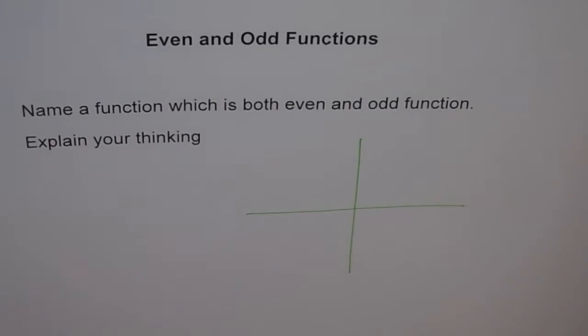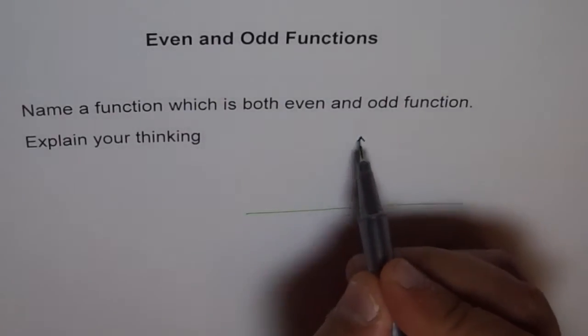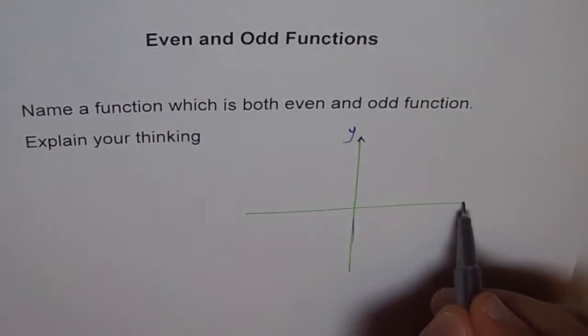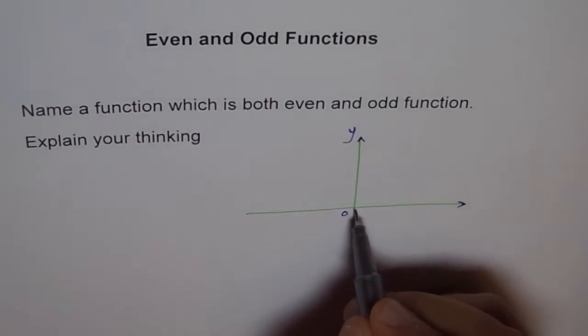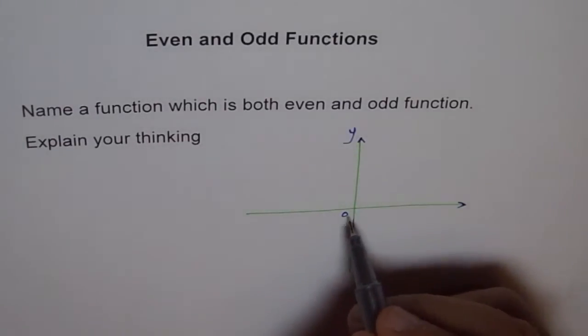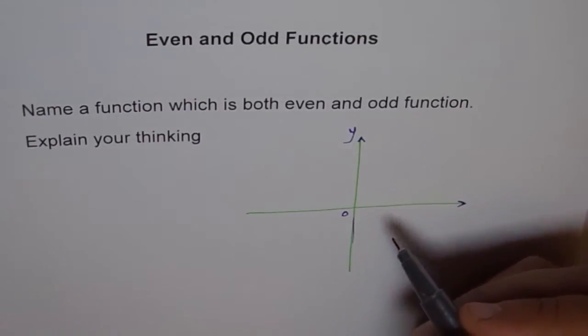So, what we are looking for is something which is symmetric to y-axis. If it is symmetric to y-axis, then it is even. And it is symmetric to origin, then it is odd. A function which is symmetric to both is even and odd function.